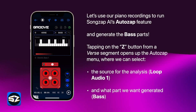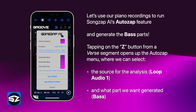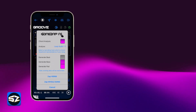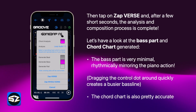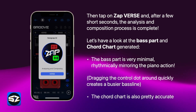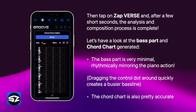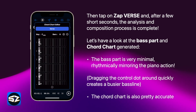Let's use our piano recordings to run the AutoZap feature and generate the bass parts. Tapping on the Z button from the verse segment opens up the menu where we can select the source for the analysis and what we want generated. Then tap on Zap Verse, and after a few short seconds the analysis and composition process is complete.